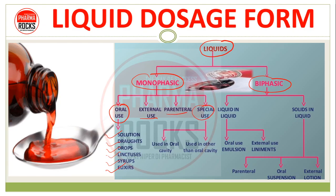फिर biphasic का समझें कि आप detail में देखते हो, तो liquid in liquid — oral use में emulsion, और external use में आप liniment भी consider कर सकते हैं. And solid in liquid — parenteral, oral suspension, and external lotion. जो कुछ biphasic हैं — जैसे calamine lotion — तो calamine lotion इसके अंदर include होगा. और जो other normal lotions होते हैं, वो भी कई बार monophasic के अंदर हम include करते हैं.